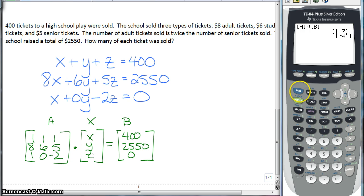We quit out, and we go to second matrix. We're going to go edit matrix B, which is now a 3 by 1. And we have 400, 2,550, and 0.